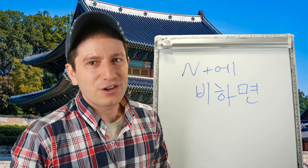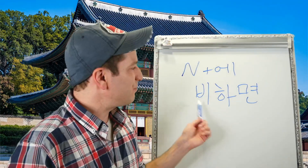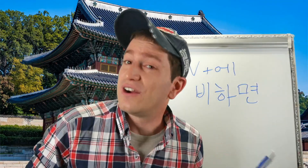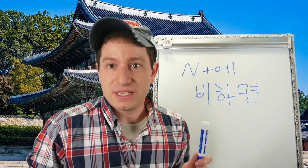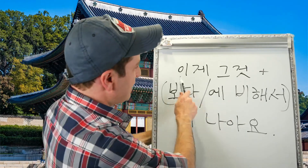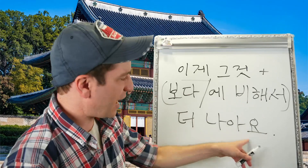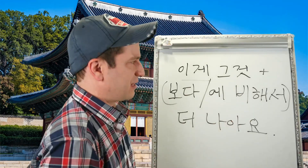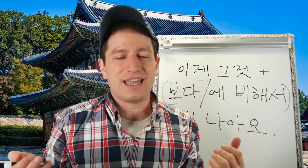There's also 에 비하면. Since 비해서 comes from the verb 비하다, 에 비하면 is simply the 면 form — meaning 'if you compare it.' It has the same usage and meaning as 비해서, but it's less common and makes a hypothetical comparison. For example: 이게 그것보다 더 나아요 and 이게 그것에 비해서 더 나아요 both mean 'I'd prefer this over that.' The 에 비해서 version simply emphasizes the comparison a little more.